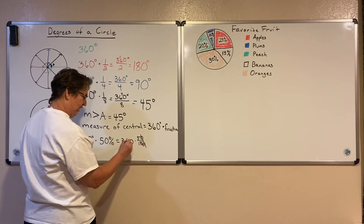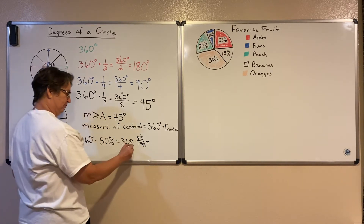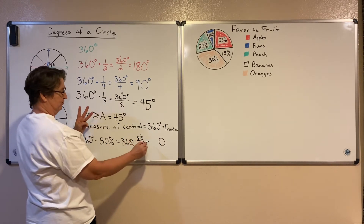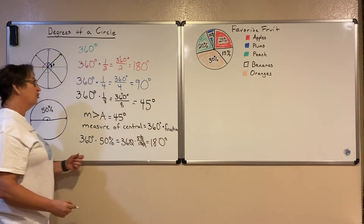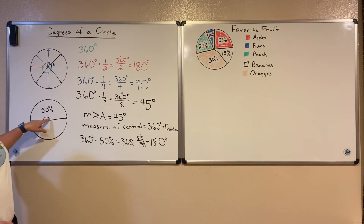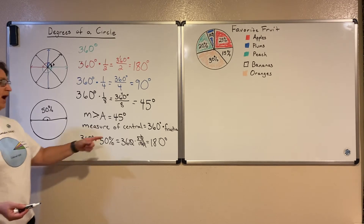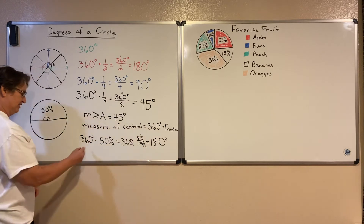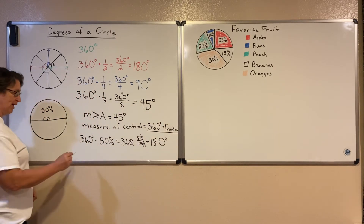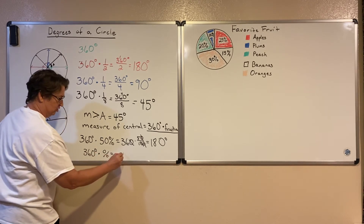So I'm really just multiplying 36 times 5, which is 180. Notice that whether I'm multiplying by 50% or by one half, the measure of that central angle is still 180 degrees. So to find the measure of the central angle, we just multiply 360 times that percent. To summarize: we can multiply 360 by our fraction or 360 by our percent to get the measure of the central angle.